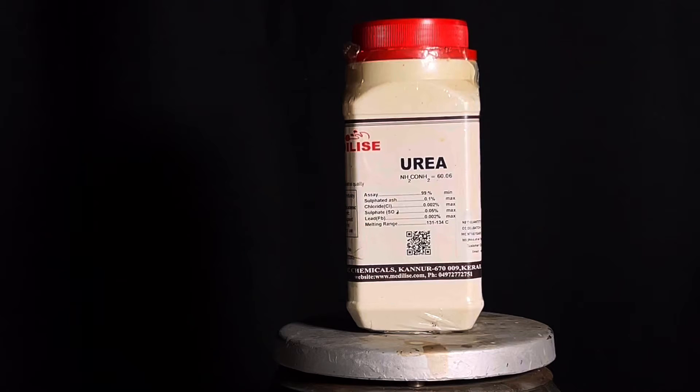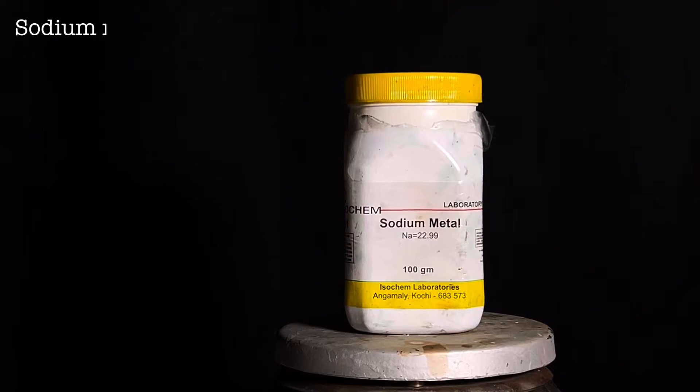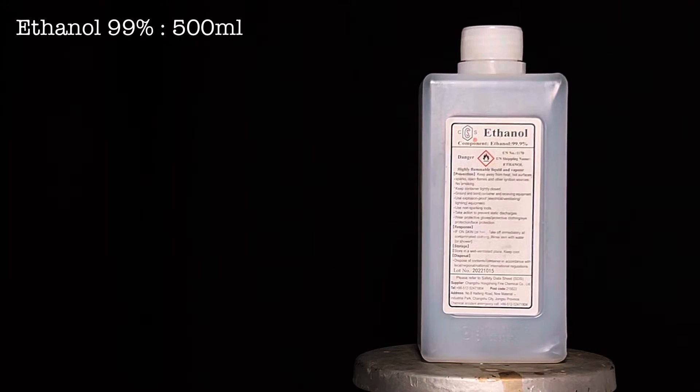For this synthesis, we need 30 grams of urea, which should be perfectly dry for the reaction to take place, 80 grams of diethyl malonate, 11.5 grams of sodium metal cleaned from impurities, 500 milliliters of absolute ethanol pre-dried using molecular sieves, and about 45 milliliters of concentrated 37% hydrochloric acid.